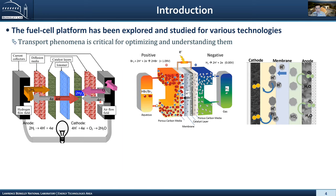These are very complicated systems in terms of a lot of different phenomena happening at different scales. These are similar to batteries, except they're open systems, unlike lithium ion. They're all electrochemical systems where nominally we have some kind of ion-conducting separator that doesn't allow the electrons through. We have cathodes and anodes and catalyst layers, some kind of porous materials that allow transport of gases or liquids, and of course these are all reacting as we go forward.